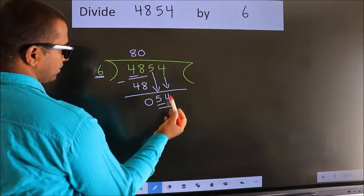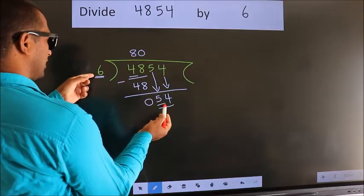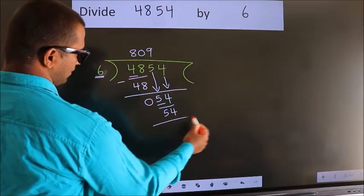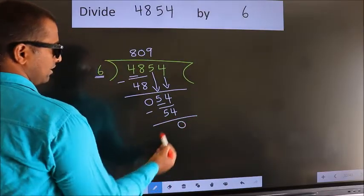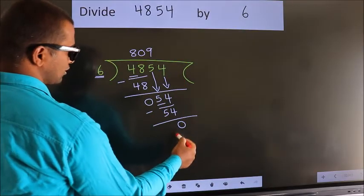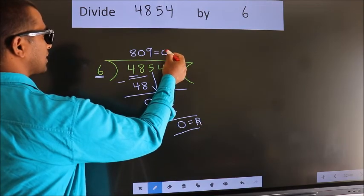So 54. When do we get 54 in the 6 table? 6 times 9 is 54. Now we subtract. We get 0. No more numbers to bring it down. So we stop here. This is our remainder. This is our quotient.